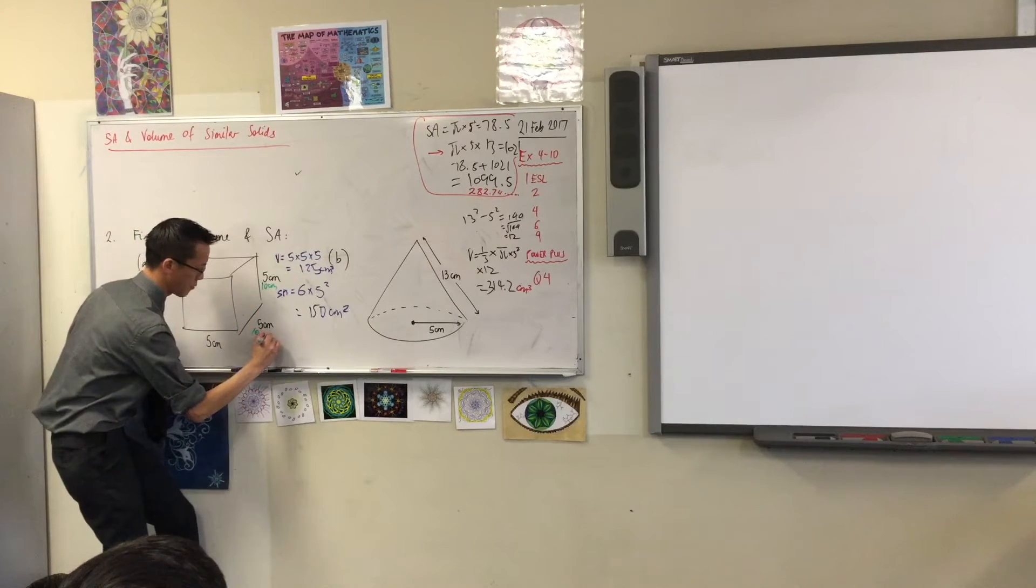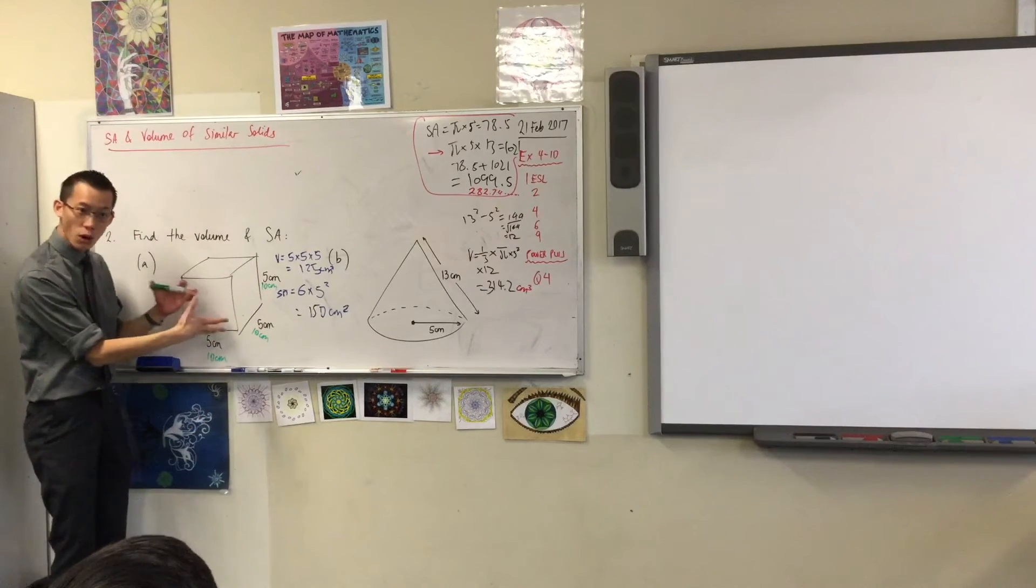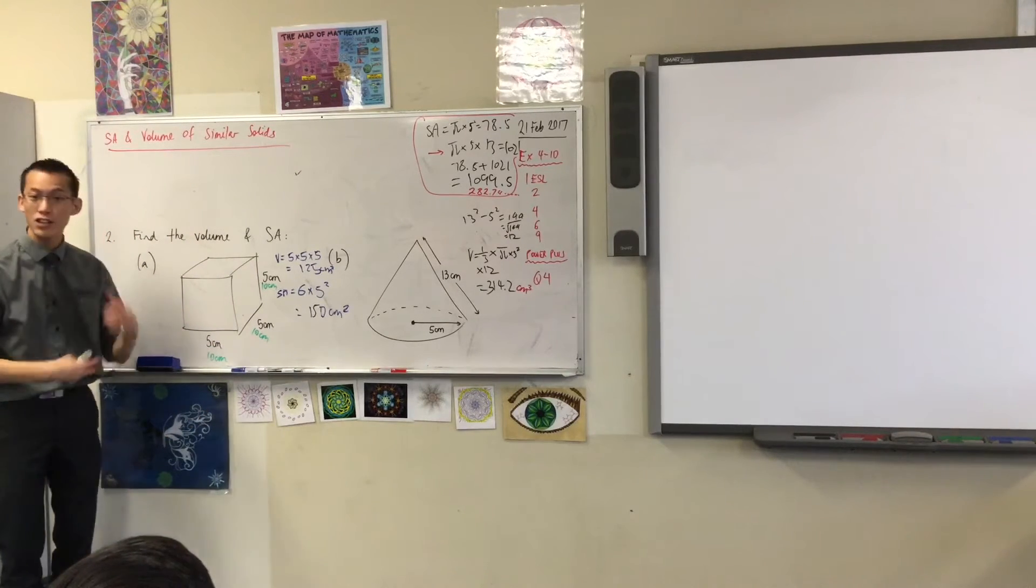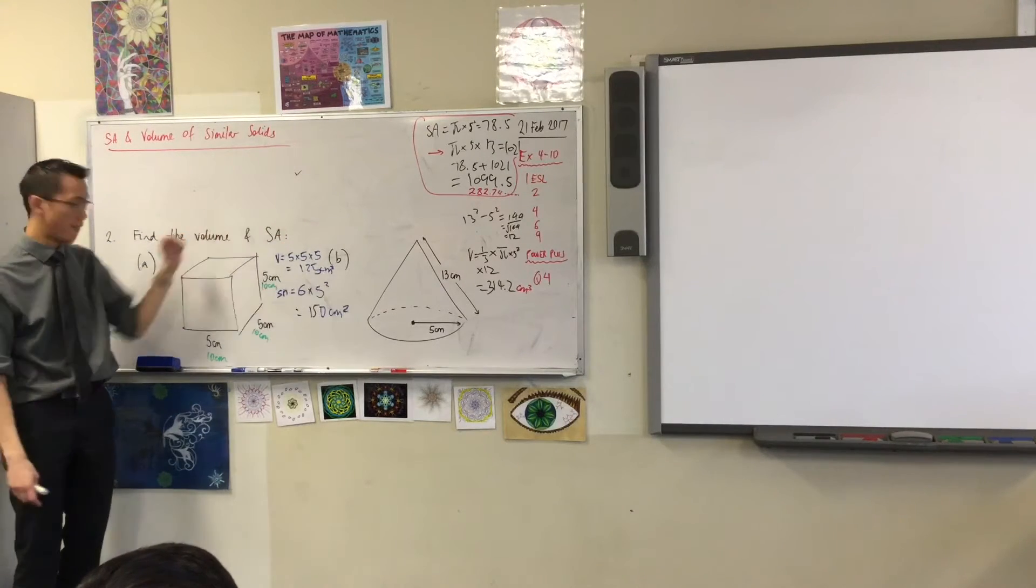10, 10, and 10. Now, for this new alternate version of the shape, I'd like you to work out the same two things. Volume and surface area.